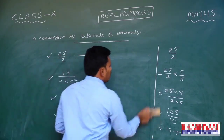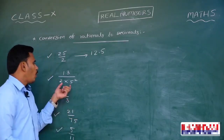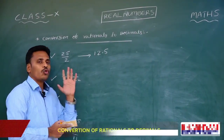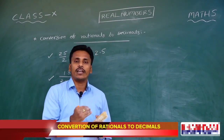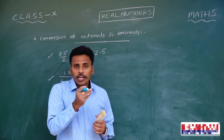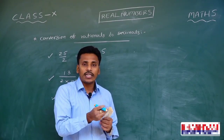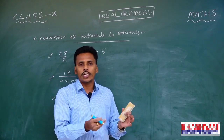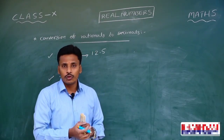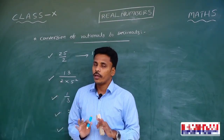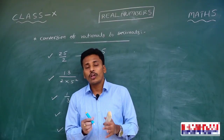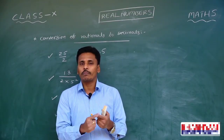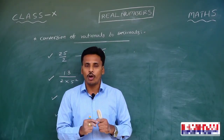Coming to the next rational number on the board: it is 13 divided by 2 into 5 squared. There is one 2 and two 5s in the denominator. My task is converting that rational number into decimal. If the denominator is a power of 10 — that is, contains 10, 100, 1000, and so on — it is easy to convert without actual division. Since 10 is a combination of 2s and 5s, and the denominator here contains only 2s and 5s, to make powers of 10 I need equal numbers of 2s and 5s.